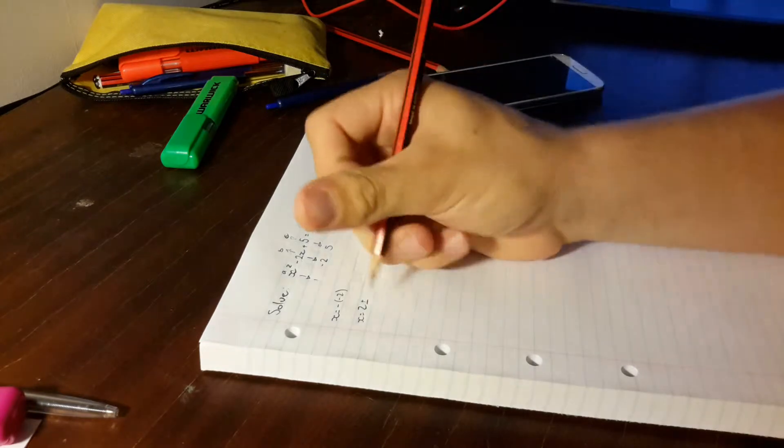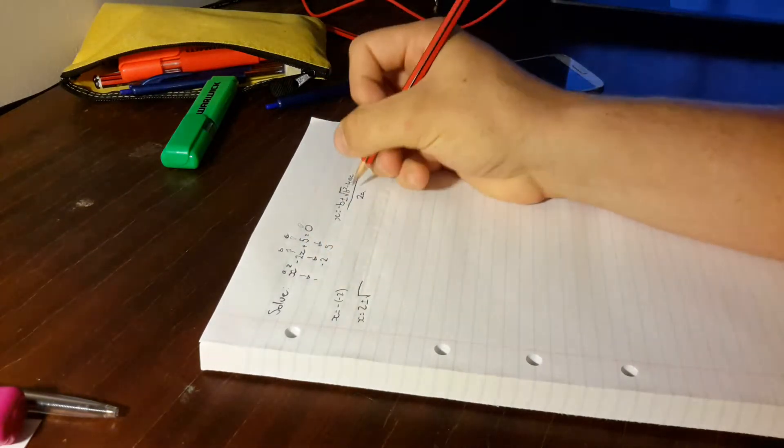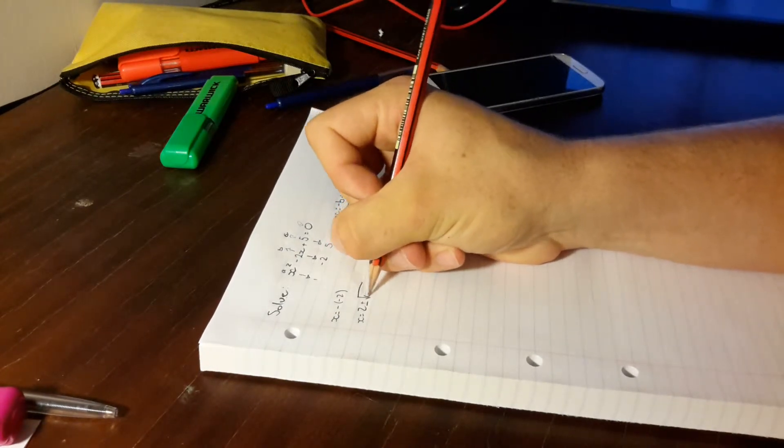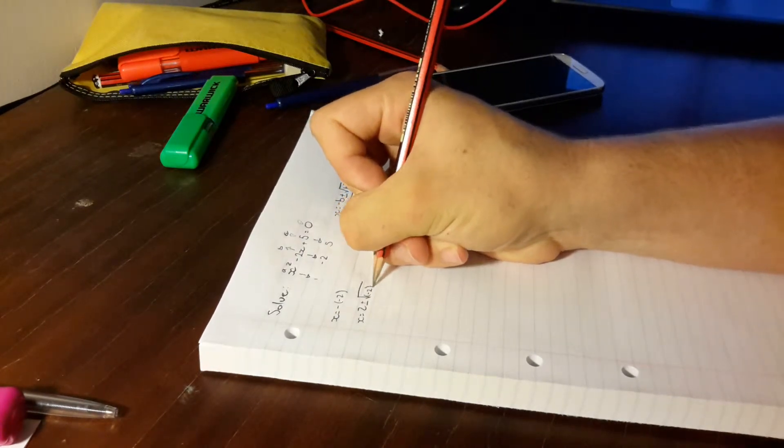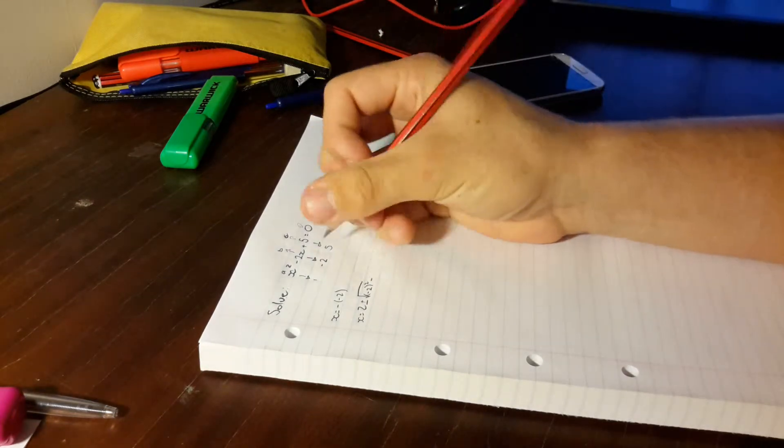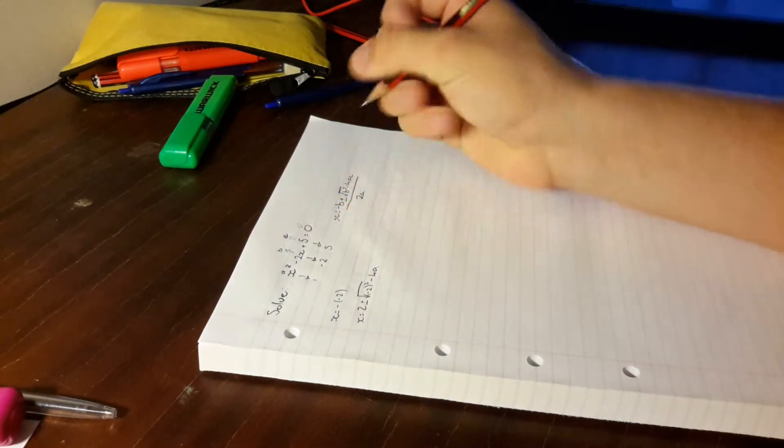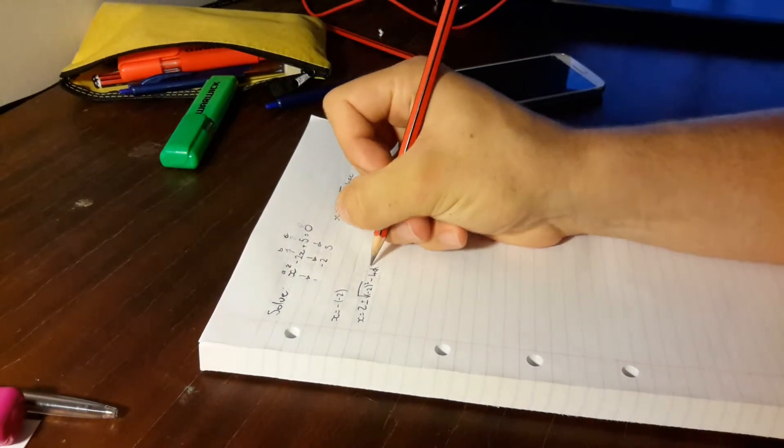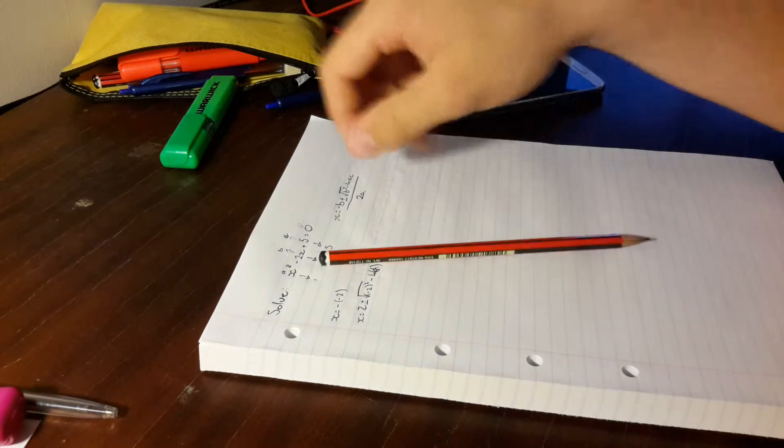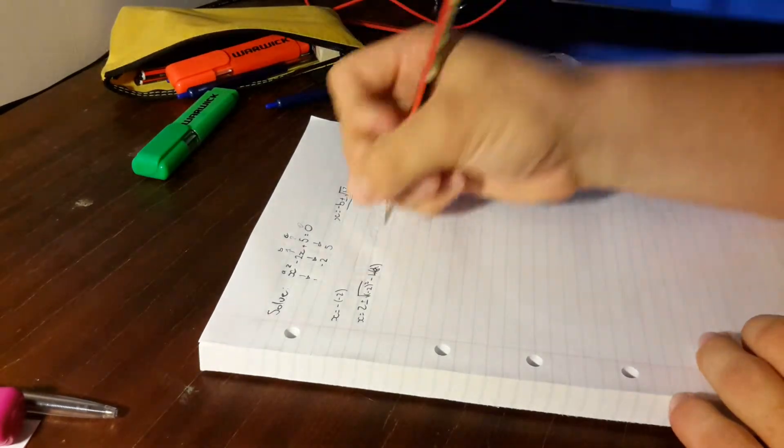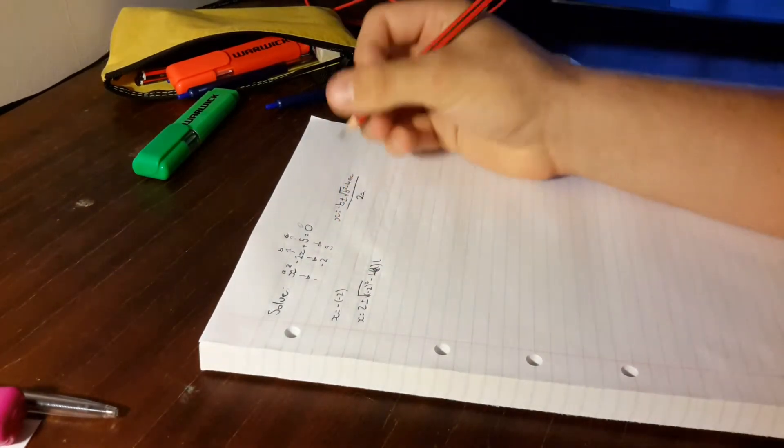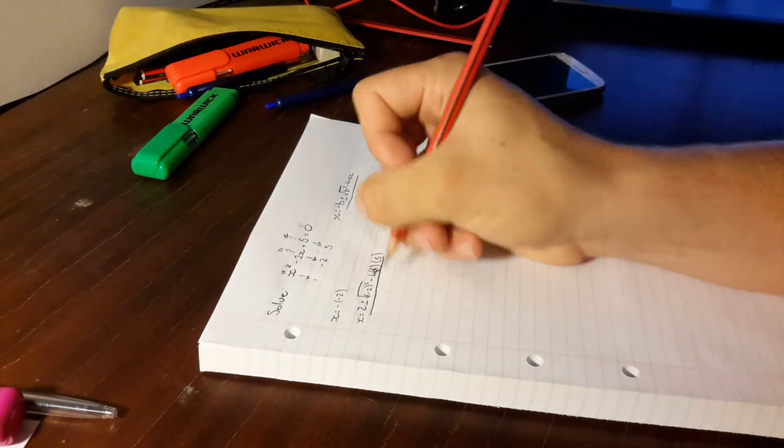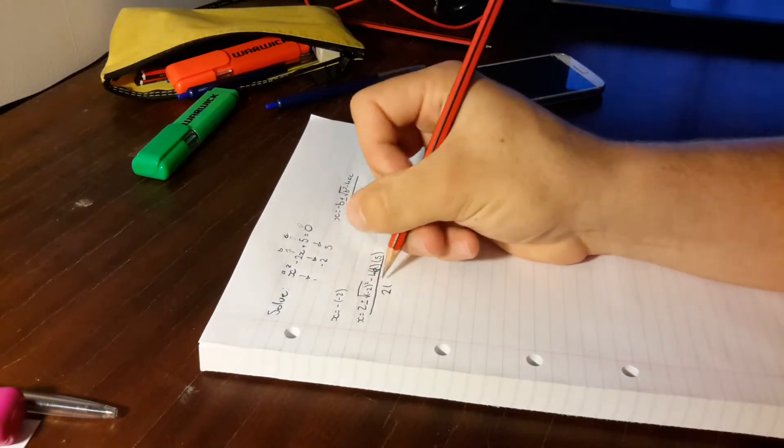Plus or minus square root of b squared. So we've got this. It's still a negative. So negative 2 squared minus 4ac. So a is 1. So there's 1 there. And then c is the 5 over 2 times 1.